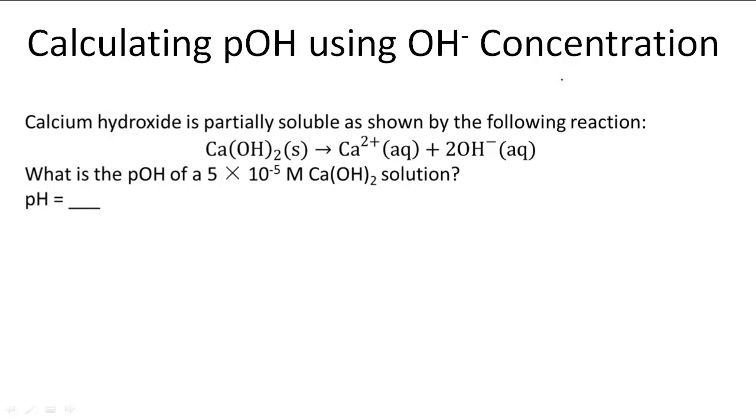Calculating pOH using OH negative concentration. In this problem, calcium hydroxide is partially soluble as shown by the following reaction: calcium hydroxide separates into a calcium ion and a hydroxide ion.